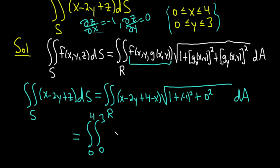And then we have this here. It'll be x minus 2y... Look, the x's cancel. So it'll be 4 minus 2y. And then 1 plus 1 is 2, so we get the square root of 2. And we said we're doing y first, so dy dx.